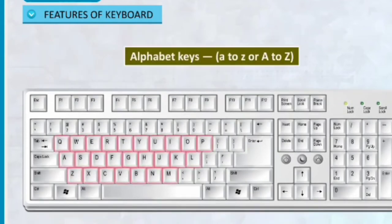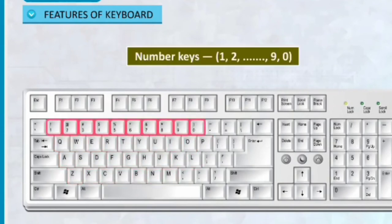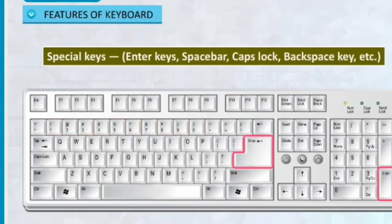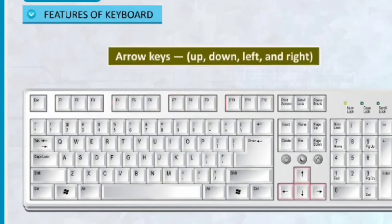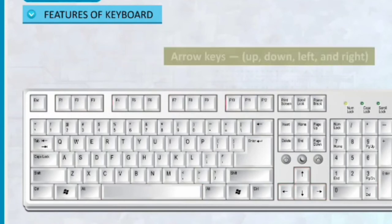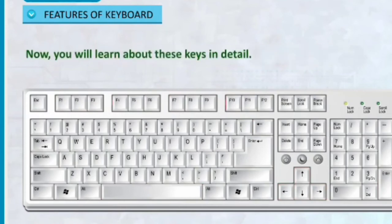Alphabet keys: small a to z or capital A to Z. Number keys: 1, 2, 3, 4, 5, 6, 7, 8, 9, 0. Special keys: Enter, Space bar, Caps lock, Backspace, etc. Function keys: F1 to F12. Arrow keys: Up, down, left, and right. Now, you will learn about these keys in detail.